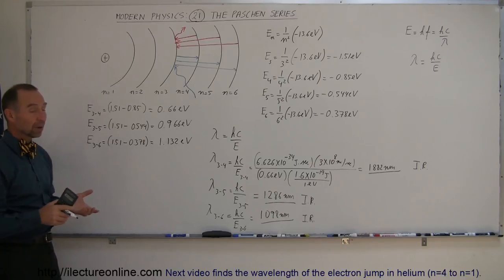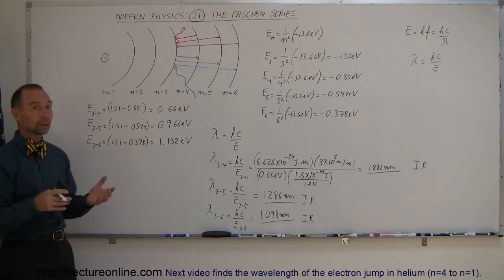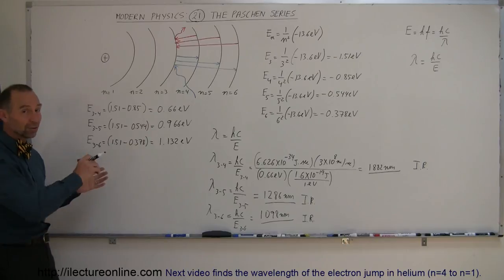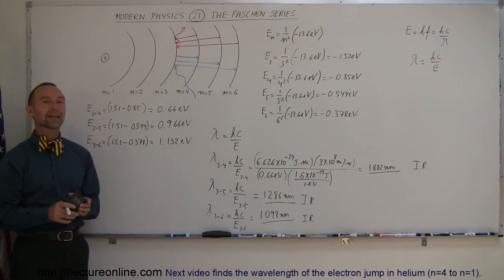Our next examples now are going to be jumps, quantum jumps or electrons, but not in the hydrogen atom. We're going to go through a little bit more complicated atoms, like maybe helium or lithium or beryllium or something like that. So if you want to know a little bit more about that, stay tuned for the next video.